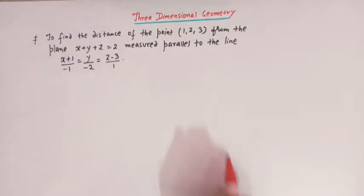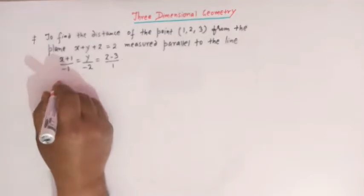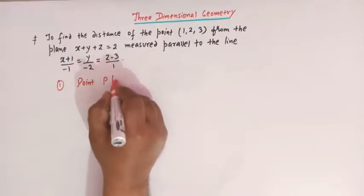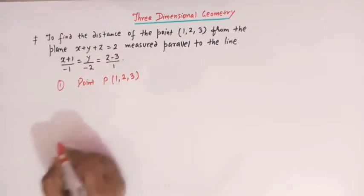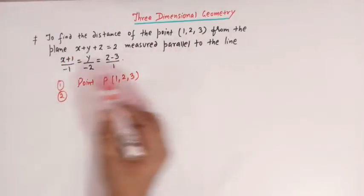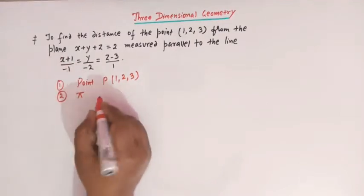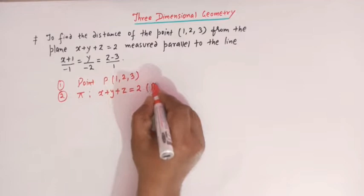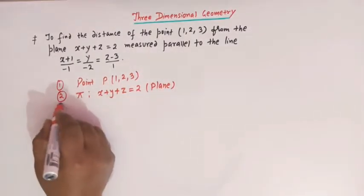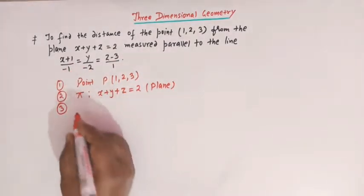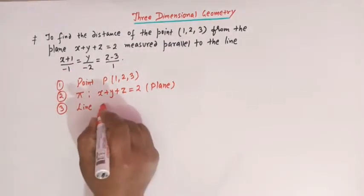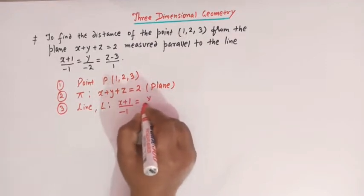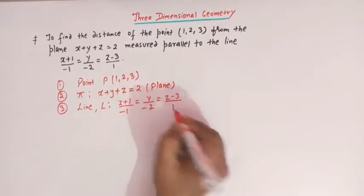We are given three things. The first is a point, denoted by P, with coordinates (1, 2, 3). The second is the equation of a plane, denoted by π, with equation x + y + z = 2. The third is a line whose equation is given as (x+1)/(-1) = y/(-2) = (z-3)/1. We have to find the distance of point P.